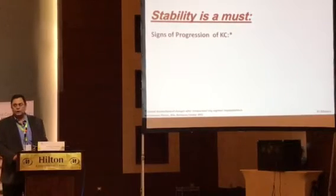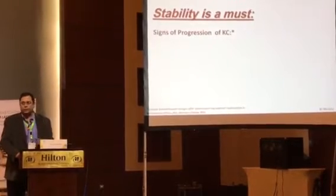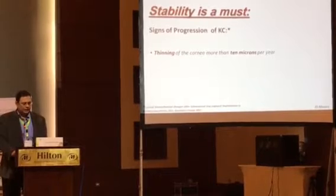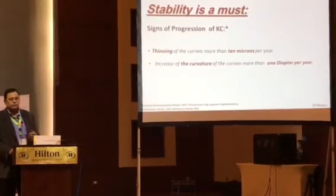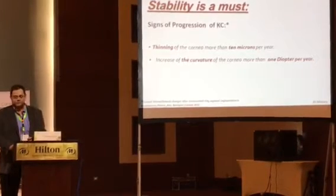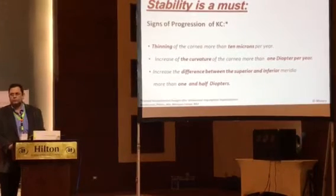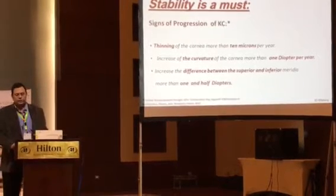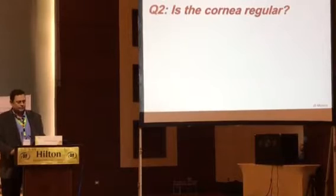The signs of stability or progression of keratoconus are: thinning of the cornea more than 10 microns per year, or an increase of corneal curvature more than 1.5 diopters per year, or an increase of the difference between the superior and inferior meridian more than 1.5 diopters. If the cornea shows instability, we have to stabilize it.